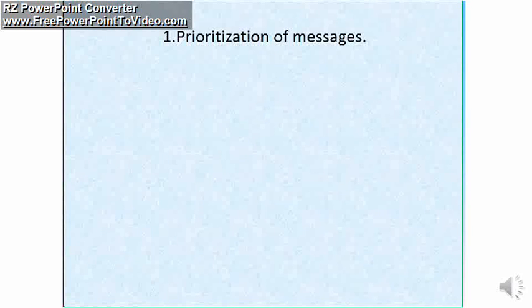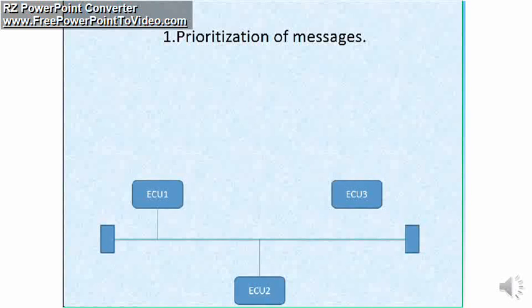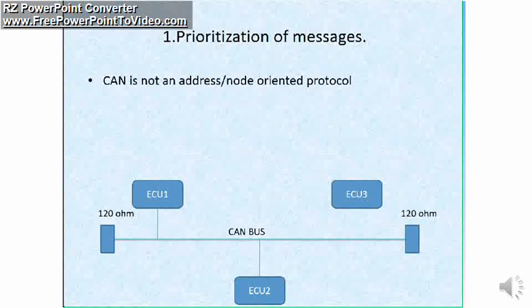Let's start with prioritization of messages. Dear friends, CAN is not a node-oriented or address-based protocol. CAN is a message-based protocol. So within a CAN network, messages are transmitted based on priority.